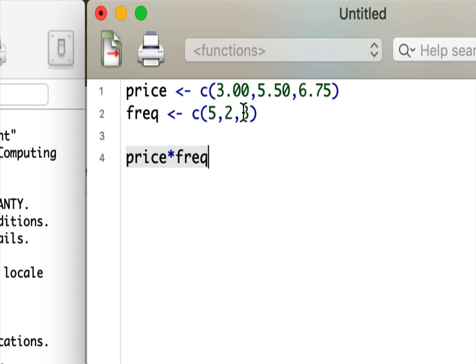So the first element, the three, will get multiplied by the five, the second element, the 5.50, will get multiplied by the two, and the third element, the 6.75, will get multiplied by the three, very easy. And then I just sum that up, and then the denominator is just the sum of the weights.